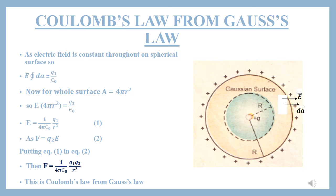अगर हम इस point पे second charge q2 ले लें, तो q1 इस charge q2 पे जो force लगाएगा वो होगी: F = q2 × E. Putting Equation 1 into this equation: F = (1 / 4πε₀) × (q1·q2 / R²). So, this is Coulomb's Law derived from Gauss's Law.